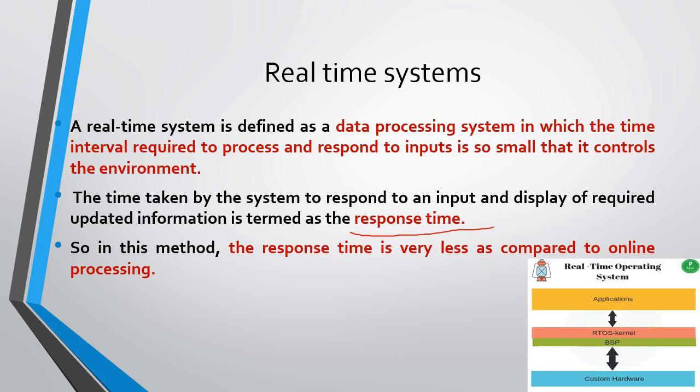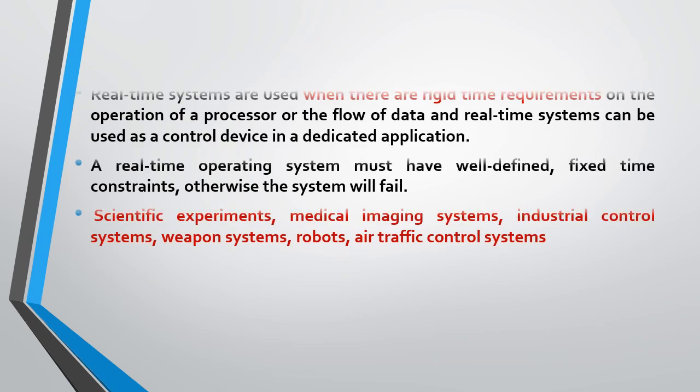There is an architecture of a real-time system where the response is produced in a faster manner. Real-time systems are used when there are rigid time requirements on the operation of a processor or flow of data, and they can be used as a control device in a dedicated application — such as an air traffic control system or weather forecasting system. A real-time operating system must have a well-defined fixed time constraint; otherwise, the system will fail.